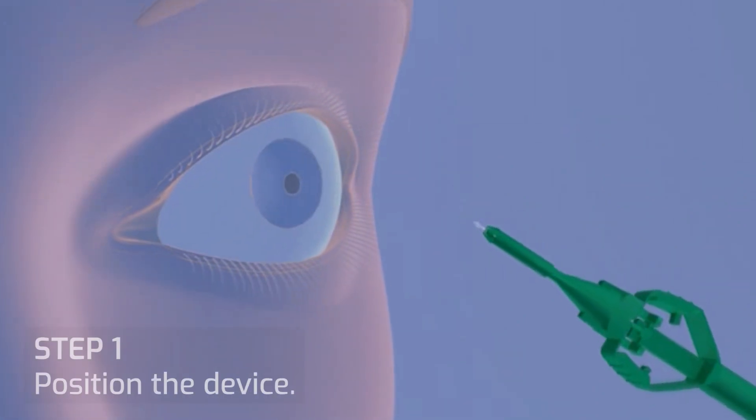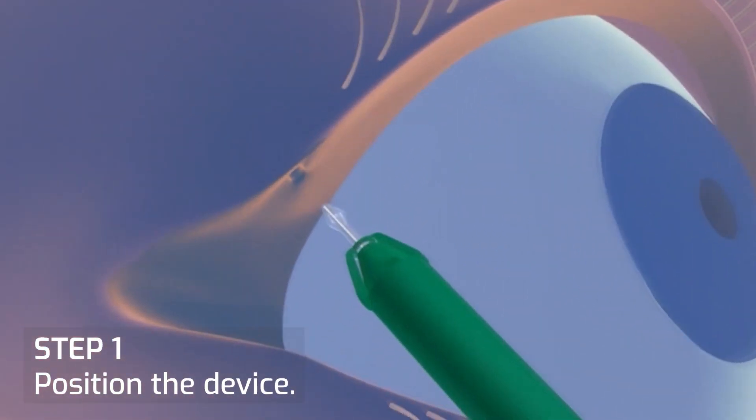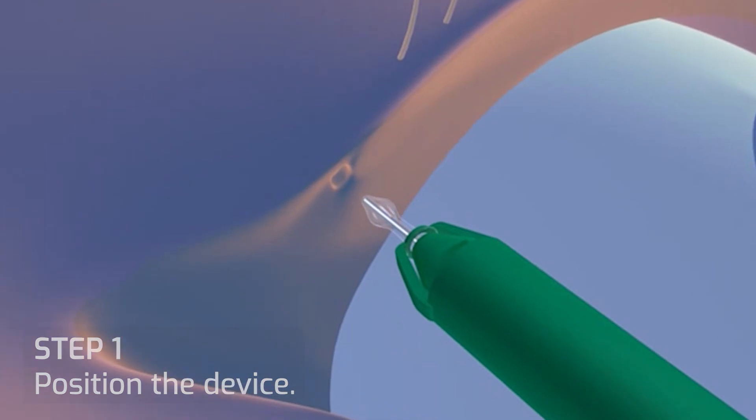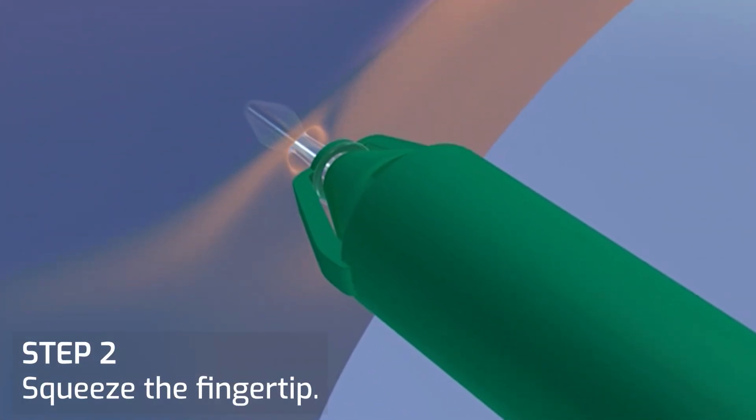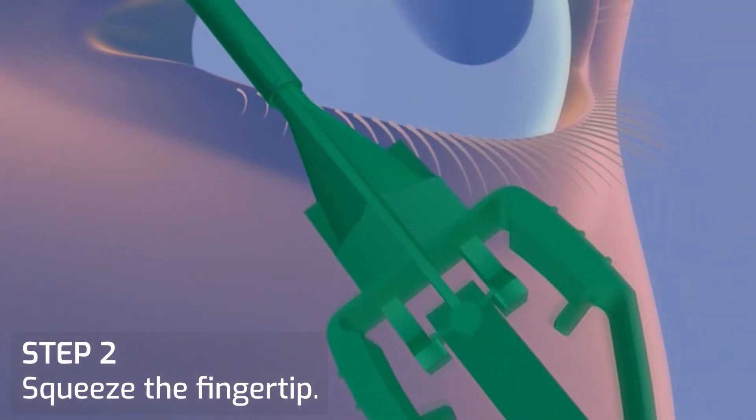Start by inserting the painless plug in the punctum using the plug inserter. The painless plug is correctly placed in the punctum when the collarette is the only visible part of the plug.